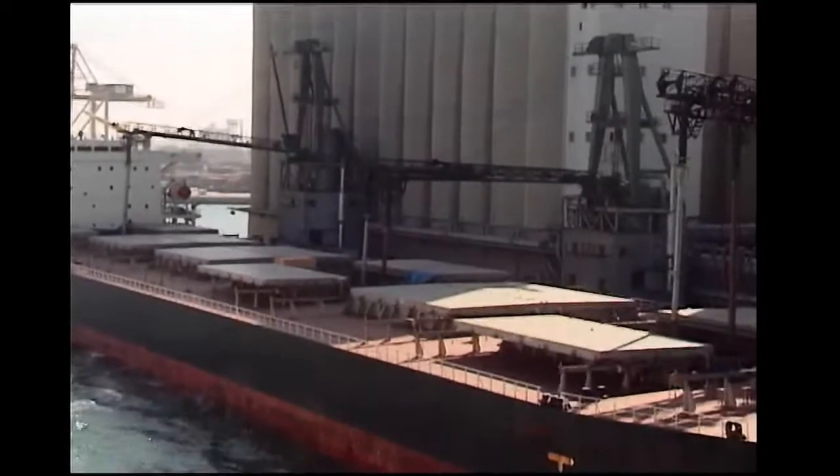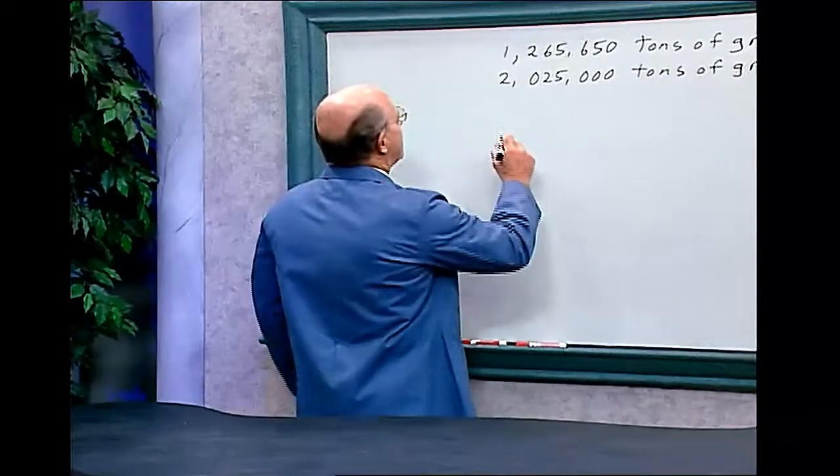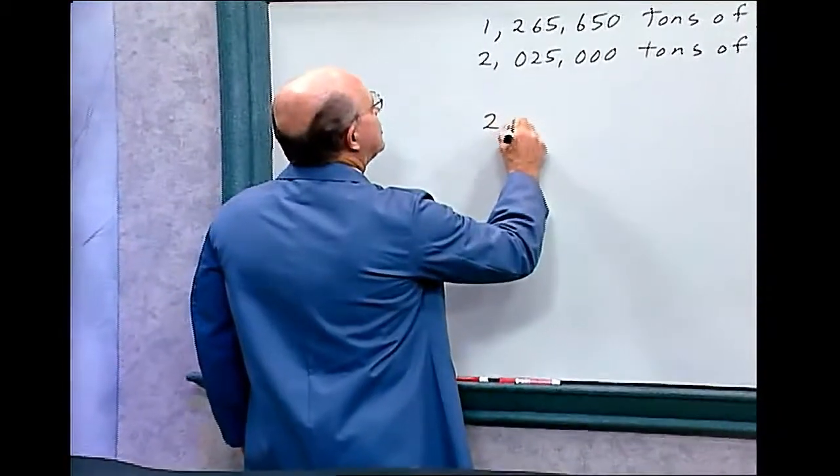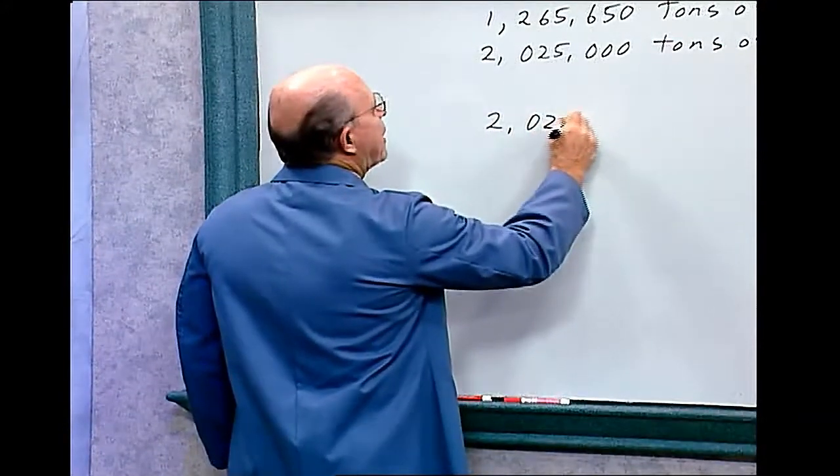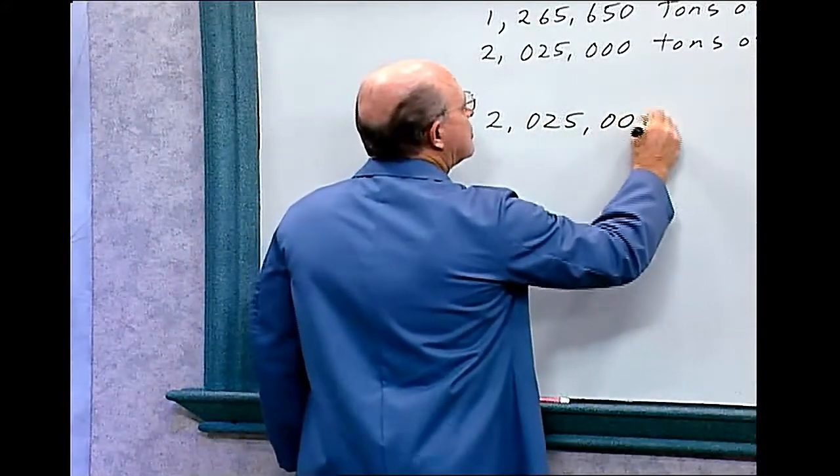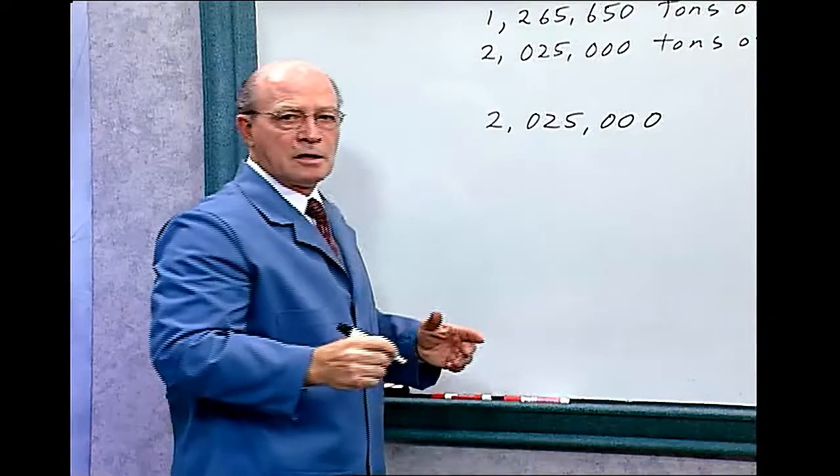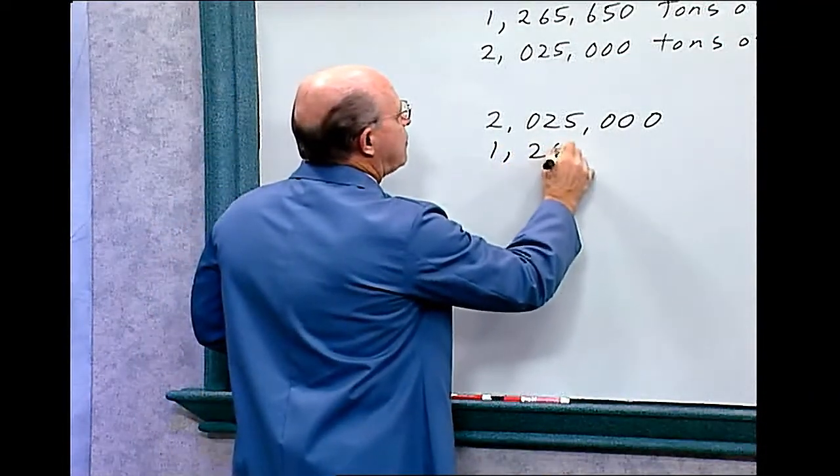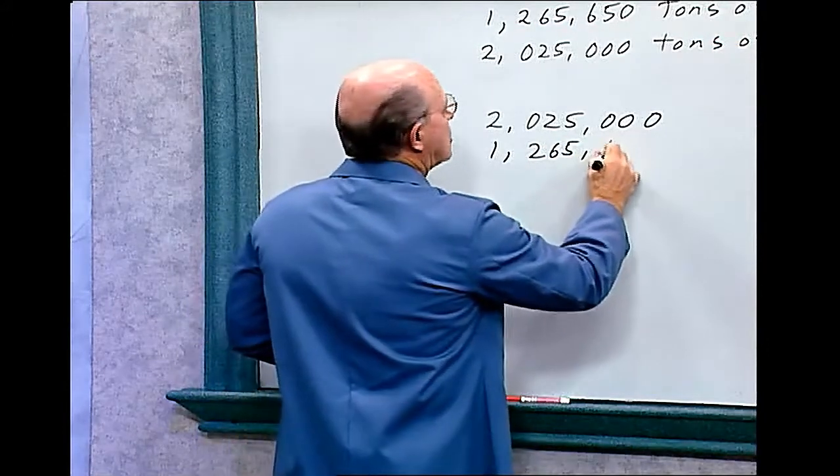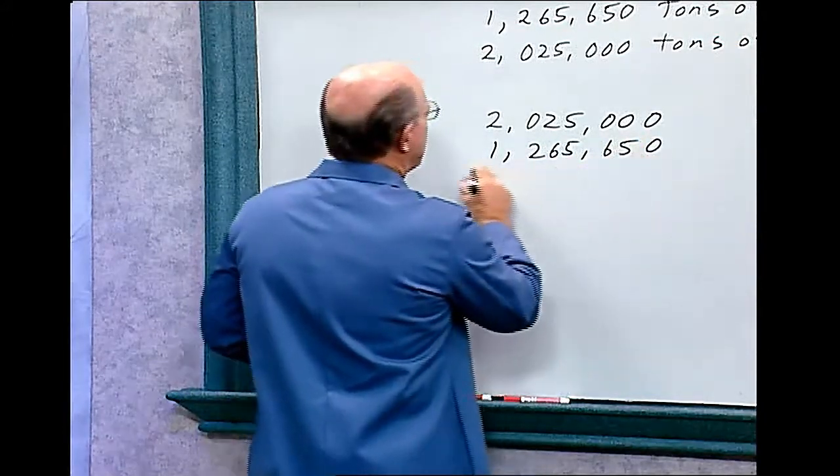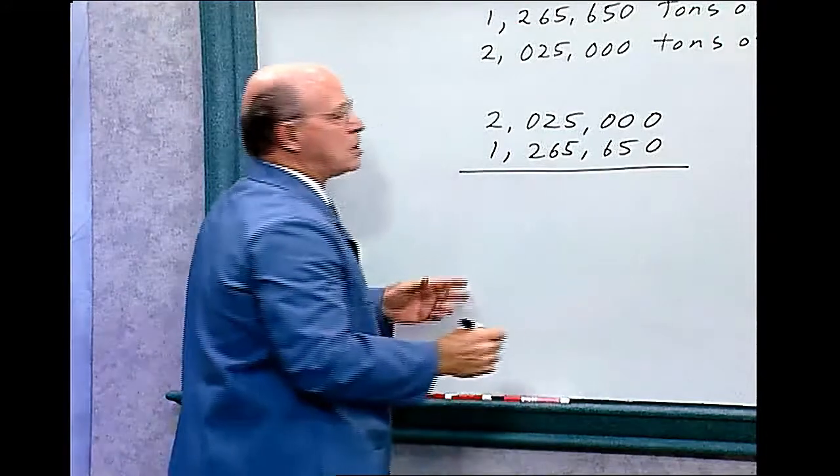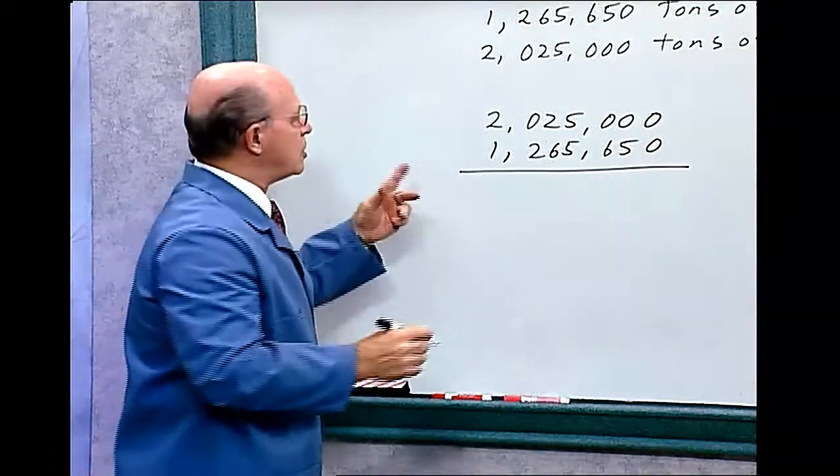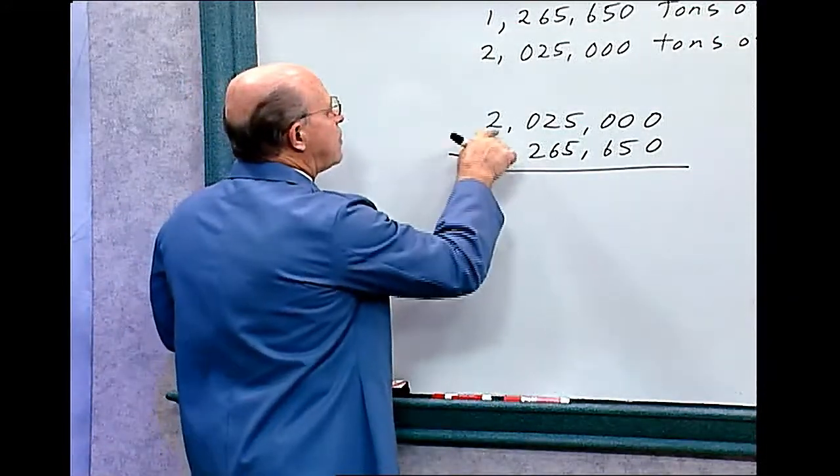Let's do the math. This year the grain elevator shipped 2,025,000 tons of grain. Last year it shipped 1,265,650 tons of grain. What is the difference between the two years? So we have to deduct last year's from this year's.